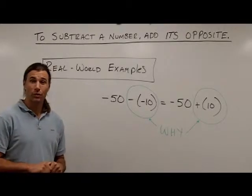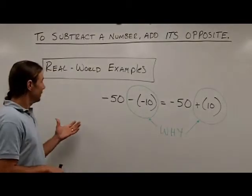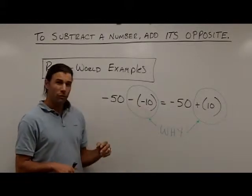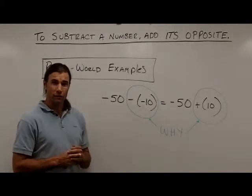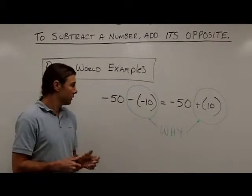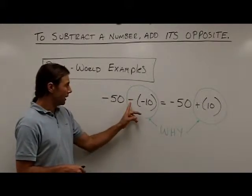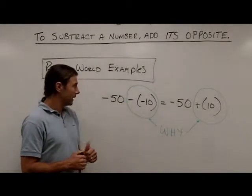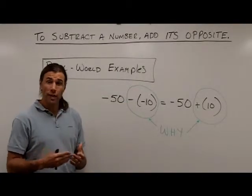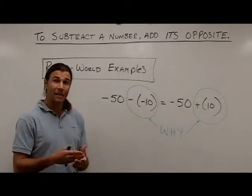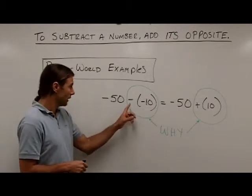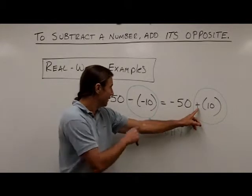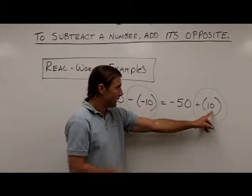Let's take a look at another real world example. This is the time when students have the most difficult time visualizing how this works. In this case, I have negative 50 and I'm subtracting negative 10 — this is subtraction of a negative. Well, if we use our rule, subtraction of a negative should be the same as adding its opposite, which will be a positive. So subtracting negative 10 is the same as adding its opposite, which is positive 10.